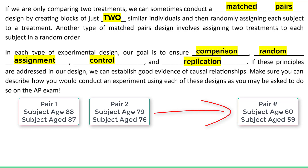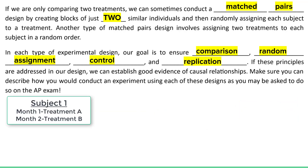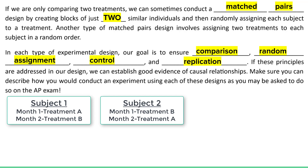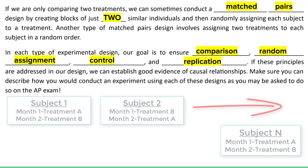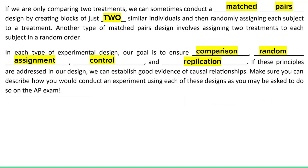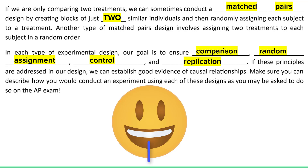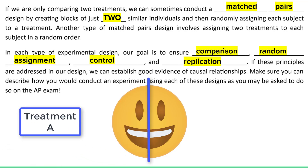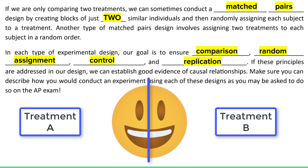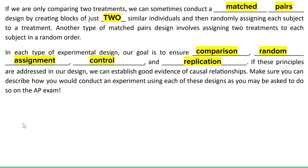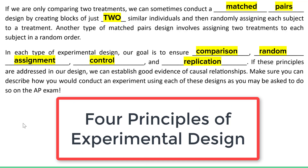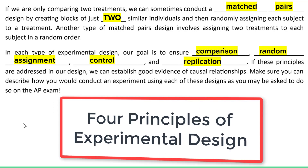Another type of matched pairs design involves assigning the two treatments to the same subject in a random order. Maybe for one month you try treatment A, and then the next month you try treatment B. The researcher's randomization occurs in which treatment you try first — some subjects will try treatment A first, some will try treatment B first. We can also do matched pairs on the same person at the same time, like face lotion — left hand gets lotion A, right hand gets lotion B, and we compare which one improved skin quality. At the end of the day, we need to ensure our four principles for any good experimental design: comparison, random assignment, control, and replication.